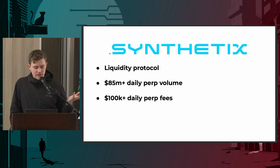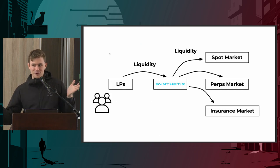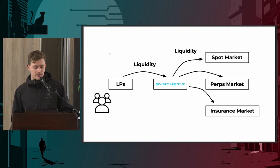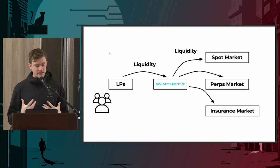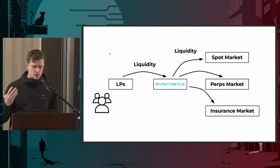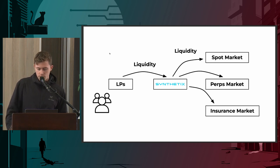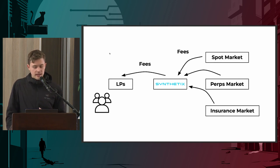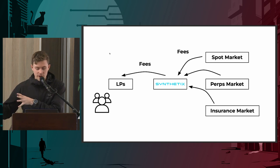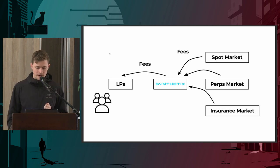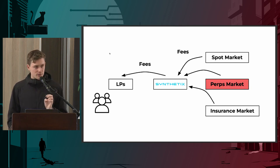Compared to the previous example, this looks similar. Liquidity providers on the left - any users, even you if you've got some crypto - take it to Synthetix and provide collateral or funds. Synthetix distributes that liquidity to different markets: a spot market where you trade from asset to asset, a perps market, or an insurance market. As long as it's generating fees, those fees go back to Synthetix and then to liquidity providers. This is termed a liquidity protocol - the middleware sitting between markets and liquidity.